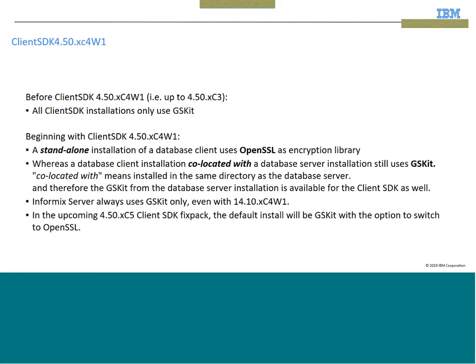Before client SDK 4.50 FC4W1, all client SDK installations only used GSKit. Beginning with client SDK 4.50 FC4W1, a standalone installation of a database client uses OpenSSL as the encryption library, whereas database client installations co-located with a database server installation are still using GSKit libraries.